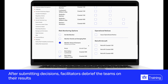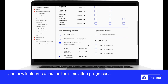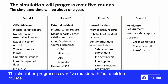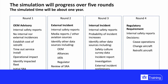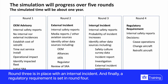After submitting decisions, facilitators debrief the teams on their results, and new incidents occur as the simulation progresses. The simulation progresses over five rounds with four decision rounds. Round one begins with an OEM advisory. Round two is where an external incident occurs from another airline. Round three involves an internal incident. And finally, a regulatory requirement is set in round four.